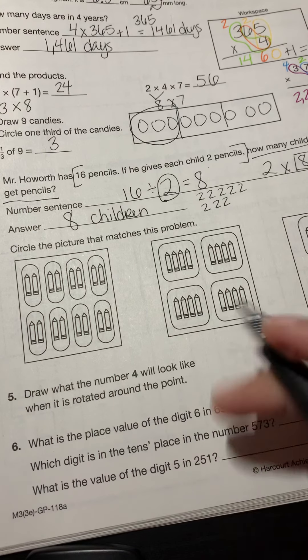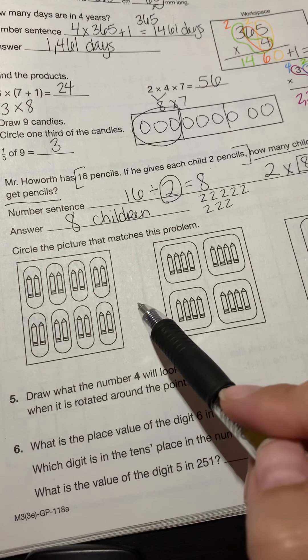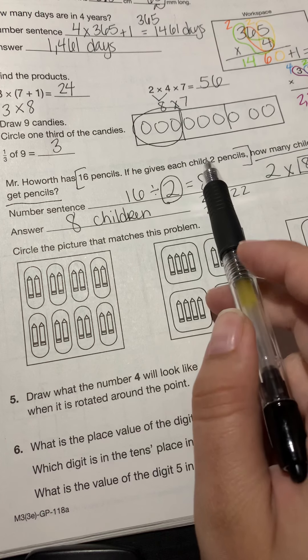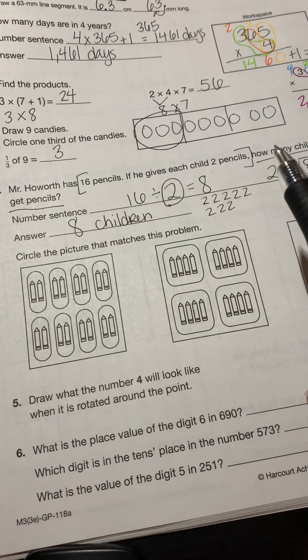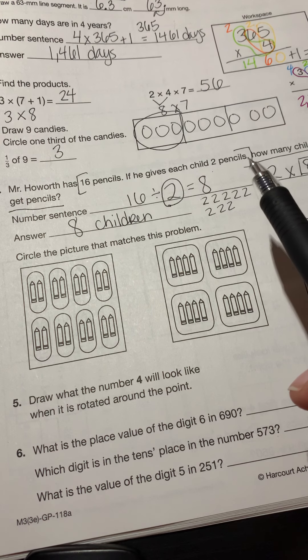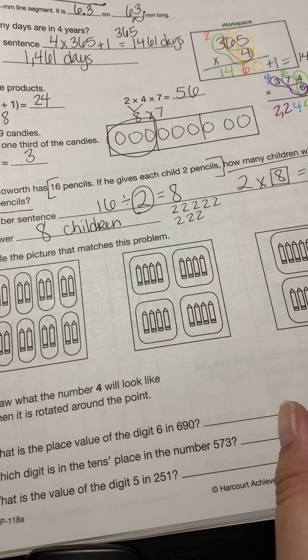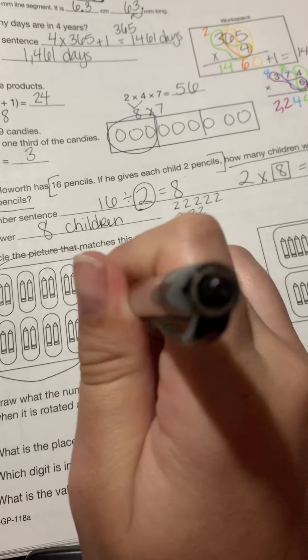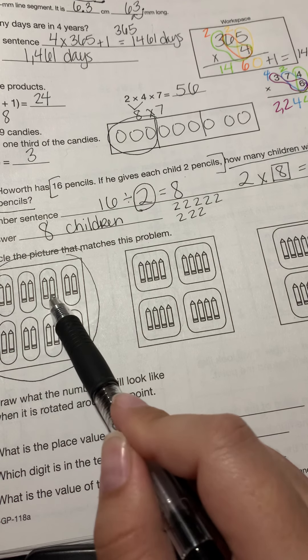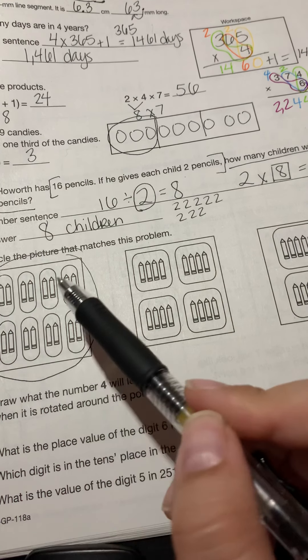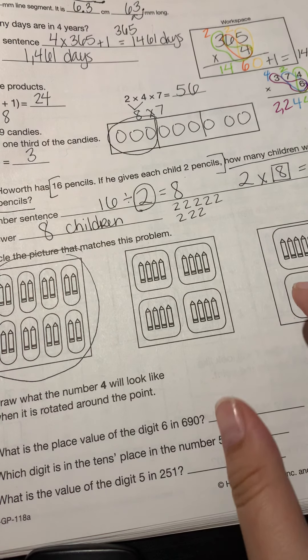All right, let's take a look at the next problem. It says circle the picture that matches this problem. So there needs to be 16 total pencils. And then we want, let's see, two, each child gets two pencils and there are eight children. So which one of these are we going to circle if we want to show that each child gets two pencils? Pause the video if you need some time to look at it or think it over. It's going to be this one. Because look, first of all, we have two, four, six, eight, 10, 12, 14, 16. So our total is 16. Then we have the pencils are in groups of two. So we know that each group of two is a child. So notice there's eight children, eight of these circles, and in the circle is two pencils. So that's why we're going to pick that one.